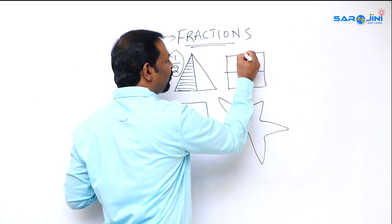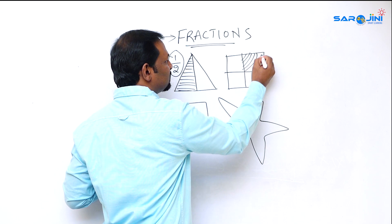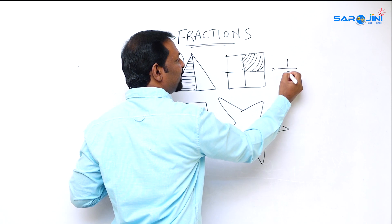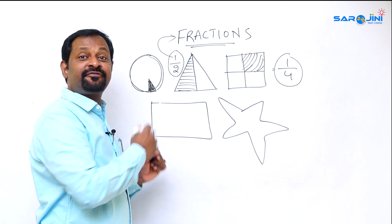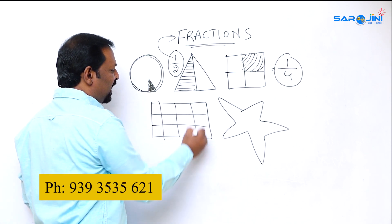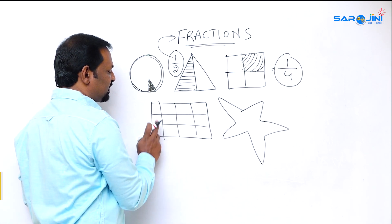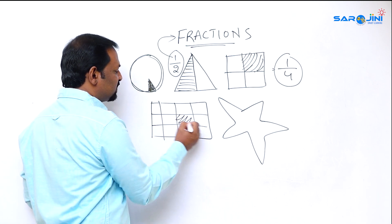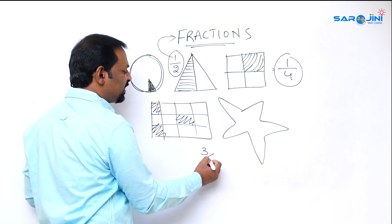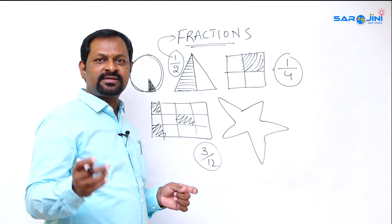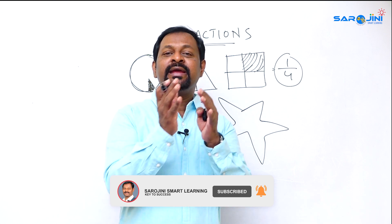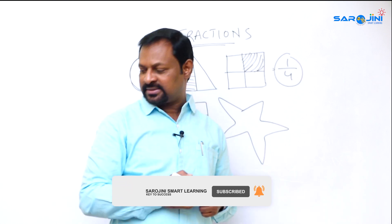Suppose I made four parts and shaded any one — that one shaded part out of four total parts is called one by four, which is a fraction. You can also make twelve parts and shade three of them, giving three by twelve — that is also a fraction. A fraction is nothing but a part of a whole.